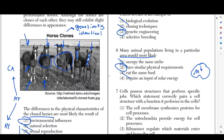Choice three — eat the same food — is the same as occupying the same niche, which causes competition. If you have 20 different species of birds all feeding off one population of mice, that's not sustainable; they're going to overhunt that mouse species. And choice four — require an input of solar energy — doesn't apply to animal populations, which don't use sunlight directly.